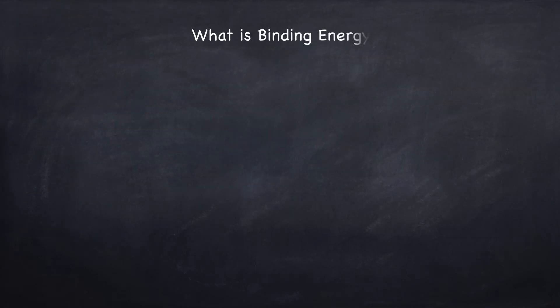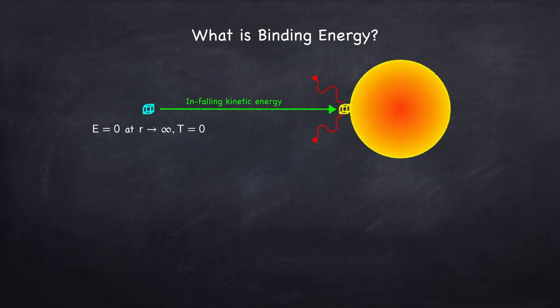So first let's recap what binding energy is. In Stellar Physics 3E I drew this diagram in which we start off with a small volume of mass at zero temperature infinitely far away from a star, and we define this energy to be zero.